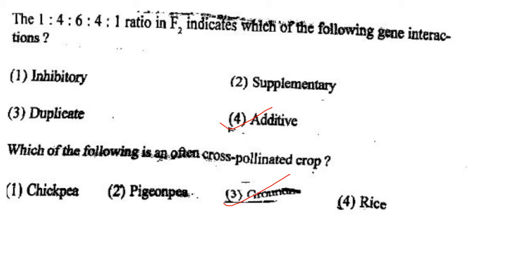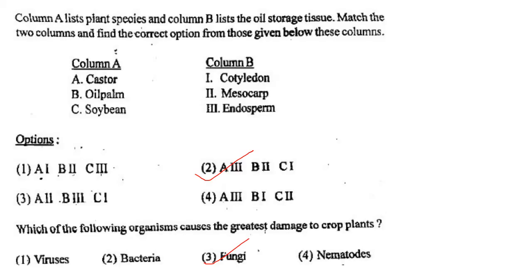Next one: Which of the following is an often cross-pollinated crop? Option 1, chickpea; option 2, pigeon pea; option 3, groundnut; option 4, rice. Answer is option 2: pigeon pea.